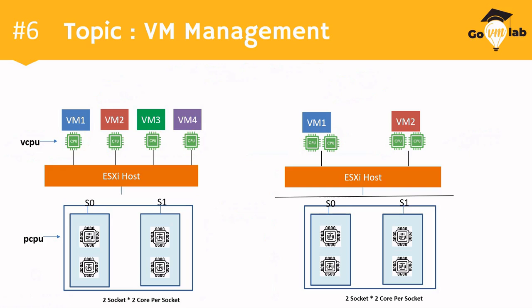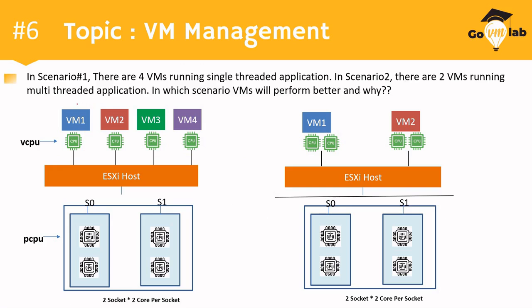We hope this is a clear and simplified scenario for all our learners. Now the problem statement: in scenario number one, there are four VMs running a single-threaded application. In scenario two, there are two VMs running a multi-threaded application. The question is: in which scenario will VMs perform better, and why?